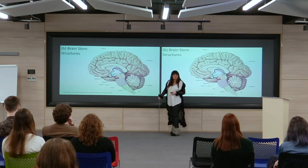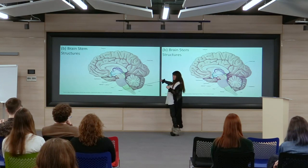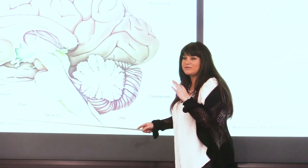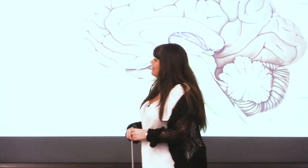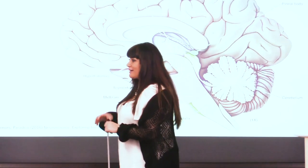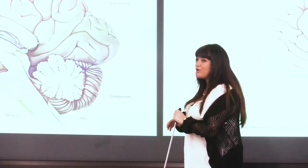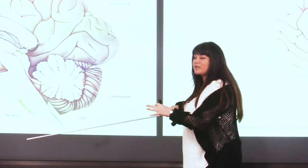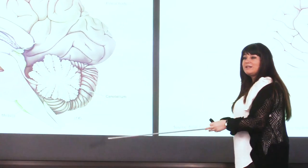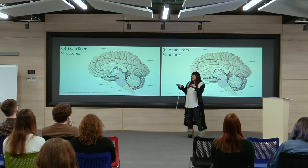Looking at the brain stem structures visible in the mid-sagittal section, we have the thalamus, found centrally. The thalamus is like a central relay station — a lot of different sensory modalities and information coming from sensory neurons first arrive at the thalamus, which sorts them out and sends them to the relevant brain regions in the cortical area. Thalamic and thalamocortical connections are essential for fundamental brain function.